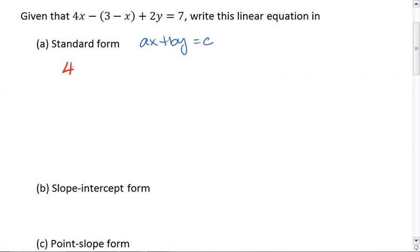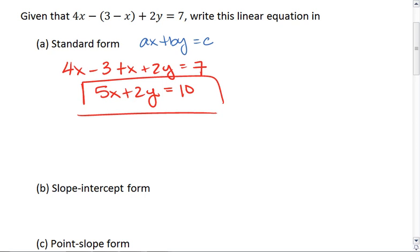First, I'm going to simplify. I'll distribute the negative. So I get 4x minus 3 plus x plus 2y equals 7. I can combine like terms. I get 5x plus 2y. And I'm going to move this negative 3 to the other side by adding 3. So I get 10. This is my standard form.